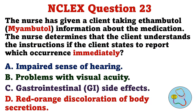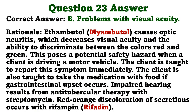The nurse has given a client taking ethambutol information about the medication. The nurse determines that the client understands the instructions if the client states to report which occurrence immediately? A. Impaired sense of hearing. B. Problems with visual acuity. C. Gastrointestinal side effects. D. Red-orange discoloration of body secretions. The correct answer is B: problems with visual acuity. Ethambutol causes optic neuritis, which decreases visual acuity and the ability to discriminate between the colors red and green. This poses a potential safety hazard when a client is driving a motor vehicle. The client is also taught to take the medication with food if gastrointestinal upset occurs. Impaired hearing results from antitubercular therapy with streptomycin. Red-orange discoloration of secretions occurs with rifampin.